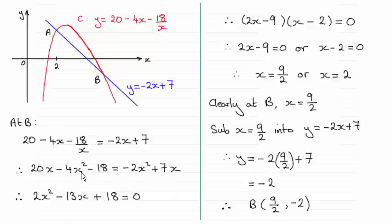Which clearly is shaping up for a quadratic equation. So I've rearranged it by adding 4x squared, taking 20x and adding 18 to both sides. That gave me this.